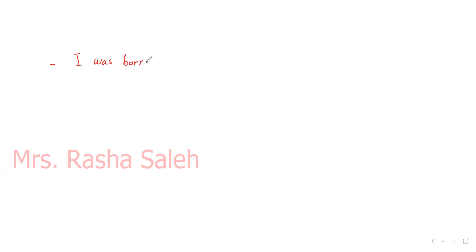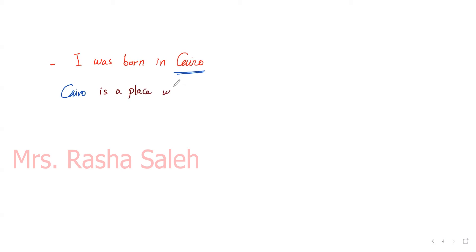If we have only one sentence and need to use 'where' as a relative pronoun, we take the place from the sentence and start with it. For example: 'I was born in Cairo.' We take 'Cairo' and add 'is a place where'. So: 'Cairo is a place where I was born.'